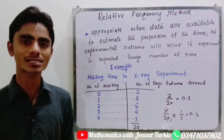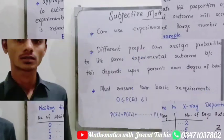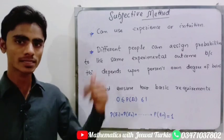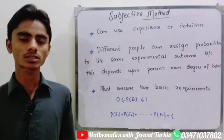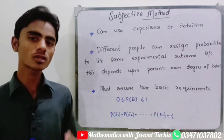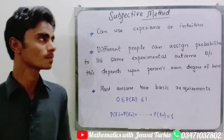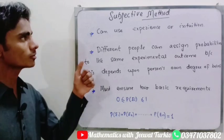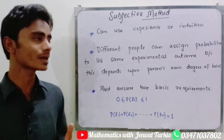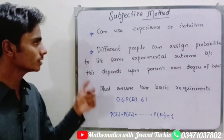In this way we can assign probability values to outcomes using the relative frequency method. Now we will see the third method of assigning probability: the subjective method. The subjective method is used when outcomes are not equally likely and relative frequency data is not available. In this method we assign probability on the basis of our own experience or intuition.